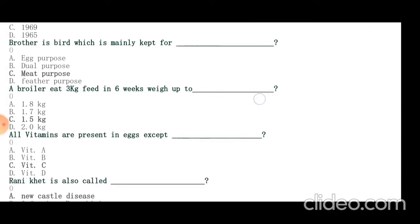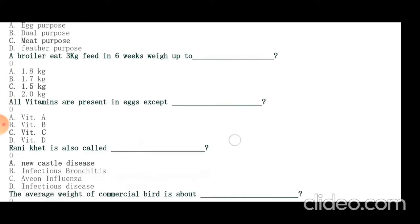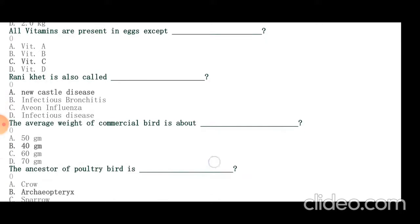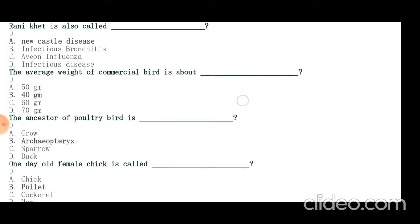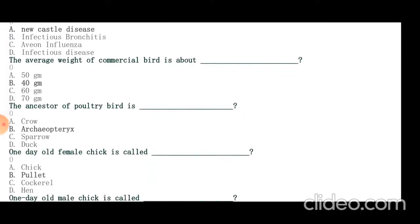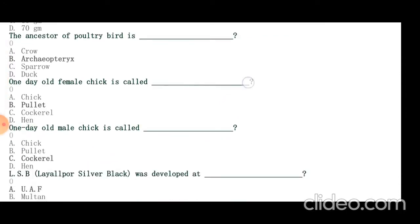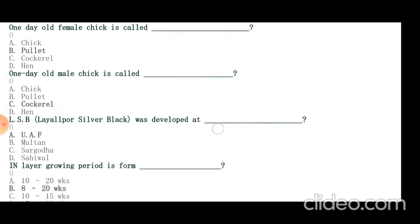All vitamins are present in eggs except vitamin C. Ranikhet is also called Newcastle disease. The average weight of commercial bird is about 40 grams. The ancestor of poultry bird is Archaeopteryx. One day old female chick is called pullet. One day old male chick is called cockerel. LSL silver black was developed at University of Agriculture Faisalabad.